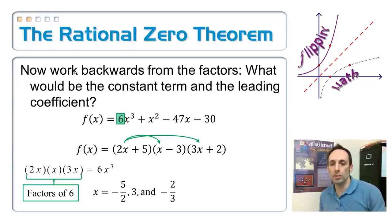So if I multiply the 2x times the x times the 3x, multiply all those things together, I get the leading term of 6x³. And notice that those numbers, 2x, x, and 3x, they're all factors of 6. In other words, two times that three, this one's times one, and I get six from that.